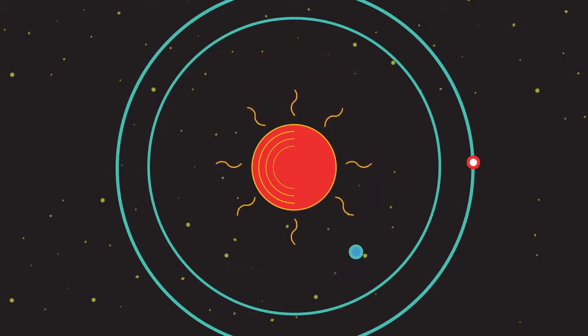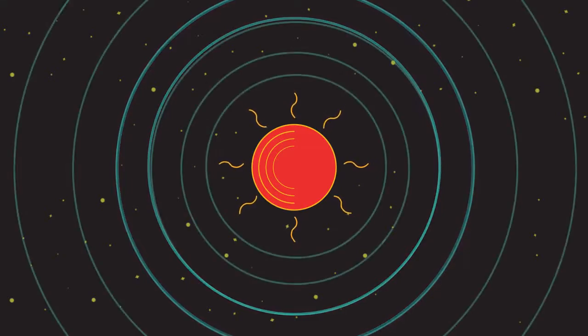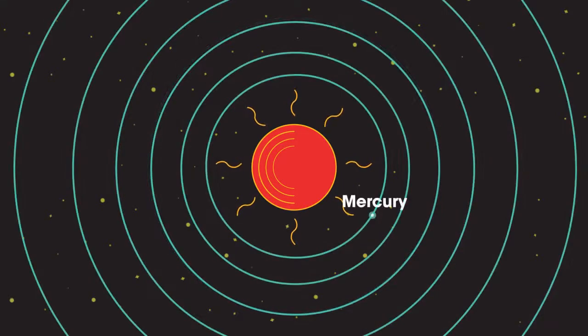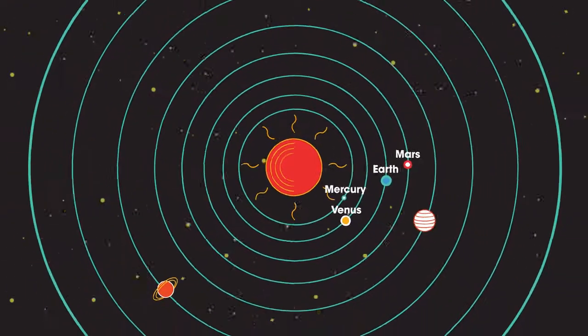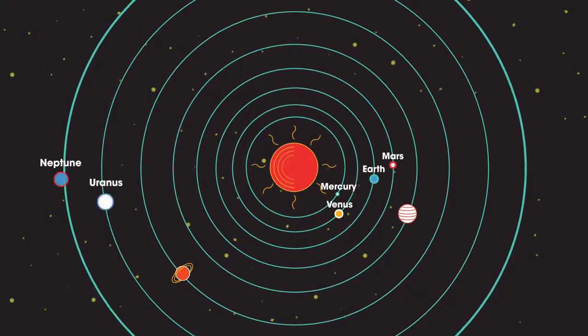This means that objects in small orbits, such as the inner planets Mercury, Venus, Earth, and Mars, travel faster than objects in larger orbits like Neptune or Uranus. Now isn't that all out of this world? Get it?